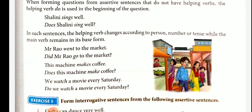Now we change the following interrogative sentences into assertive sentences. Does a cow live on grass? — A cow lives on grass. Are you feeling better today? — I am feeling better today. Shall I help you? — I shall help you. Mustn't you work hard now? — You must work hard now. Do I hate lies? — I hate lies.